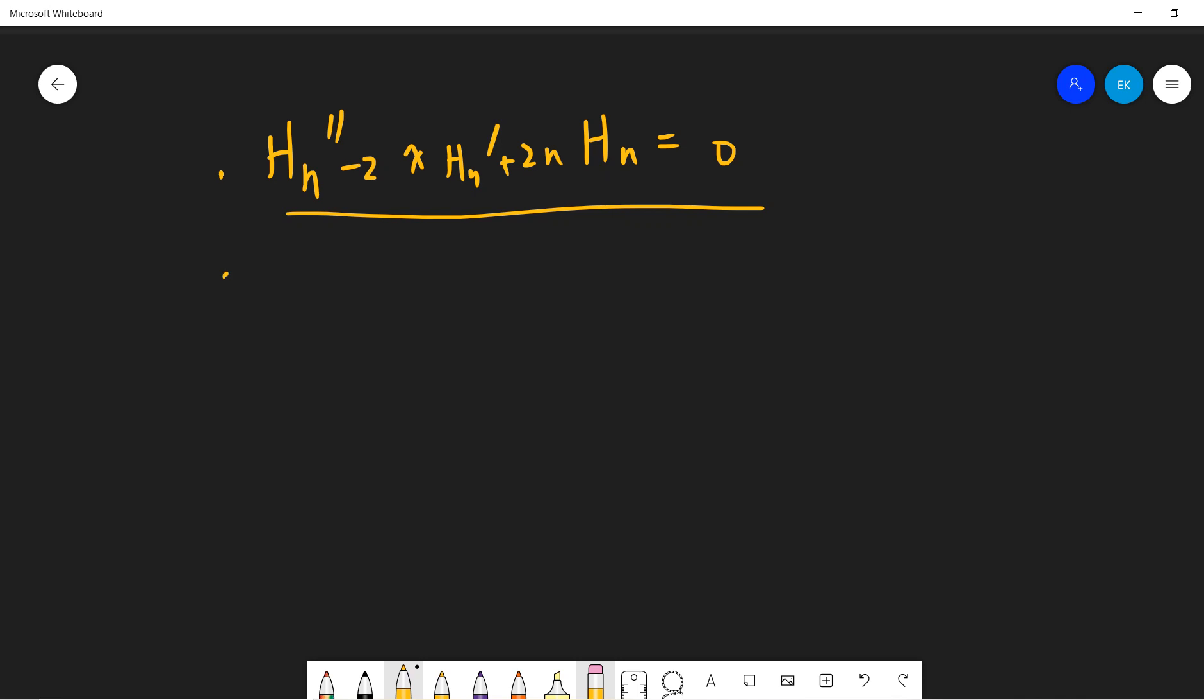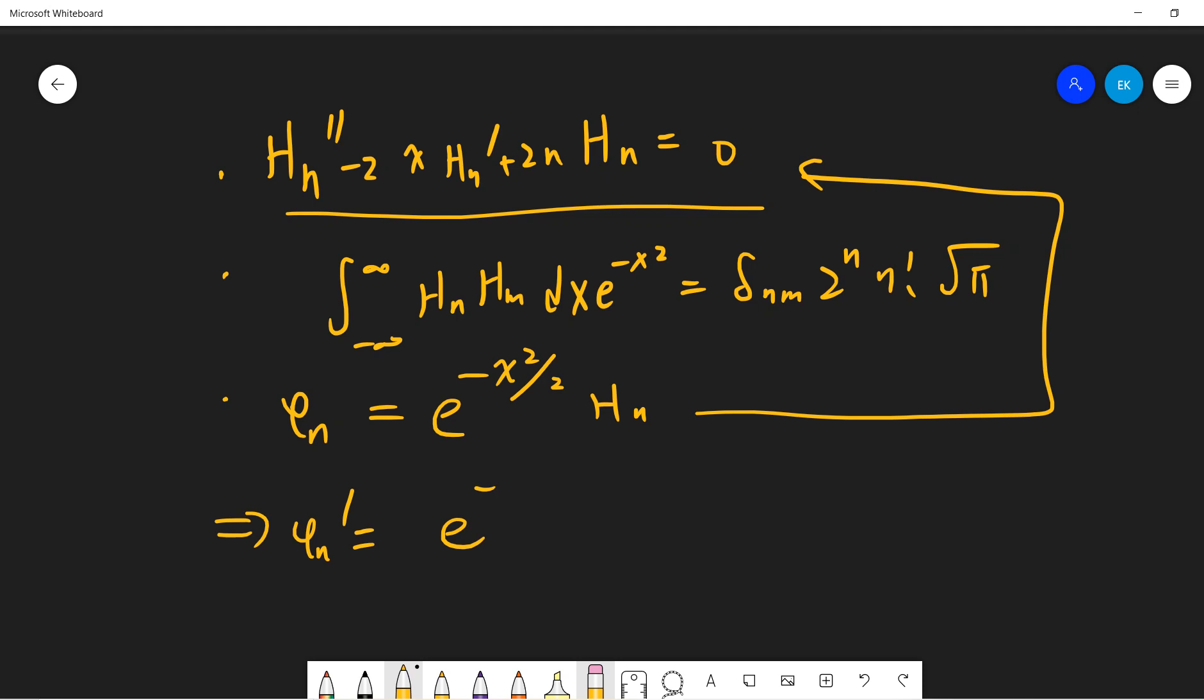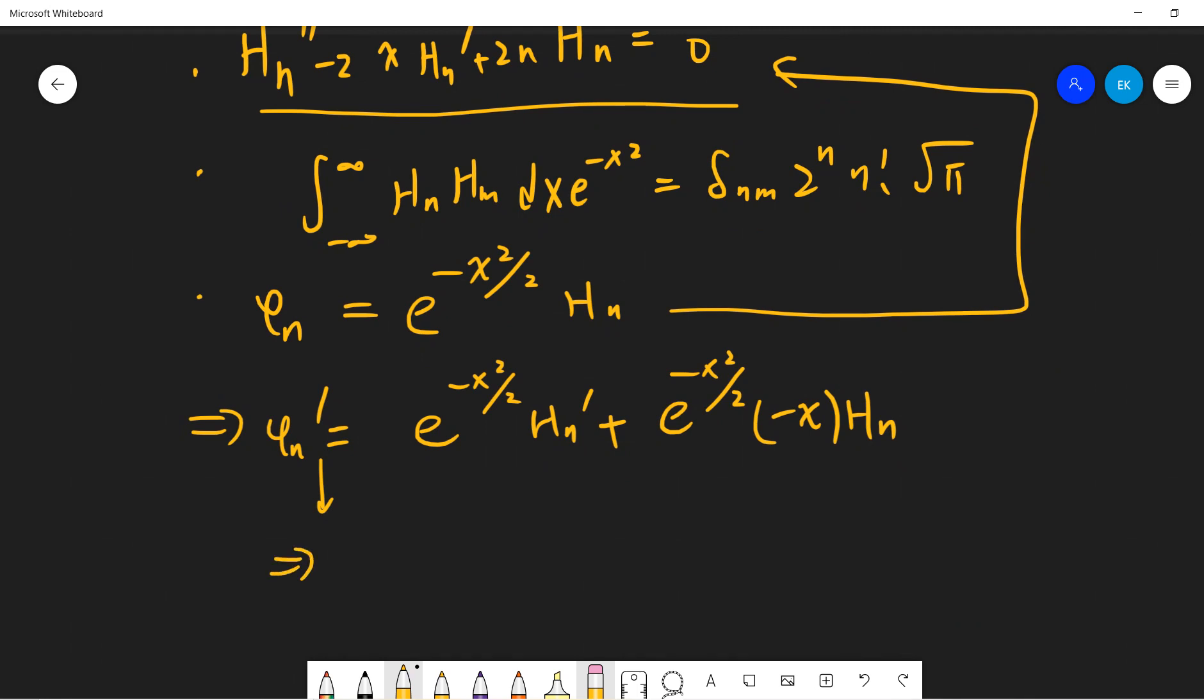So let's establish that. Recall that previously we gave the property of this kind of Hermitian polynomial, and we also gave the orthogonality conditions. So now we can make a strange change. Suppose we let φ_n equals to exponential x squared divided by 2 H_n, and we put it into here. And we get φ_n prime is basically this one, exponential minus x squared divided by 2, and then minus x H_n. And we do the second again. And finally we will get the following differential equation. So just remember this differential equation, we will use this very soon.